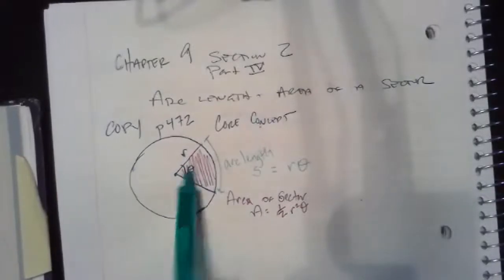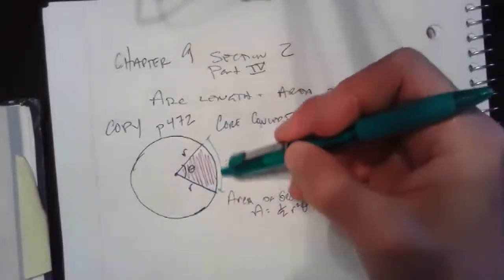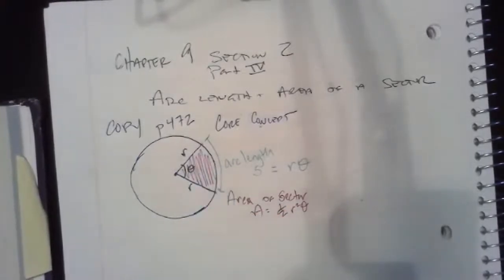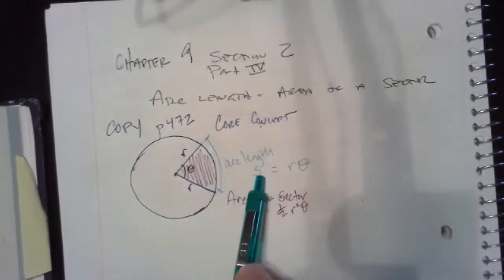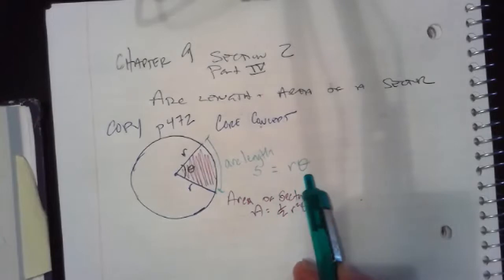So for our circle with a central angle of theta and a radius, we have this slice of pizza right here. The arc length is the crust, and then the area of the sector would be how much pizza slice you have. So the equations that you need to know is that the arc length, we call s, is equal to the radius times the central angle, so r theta.